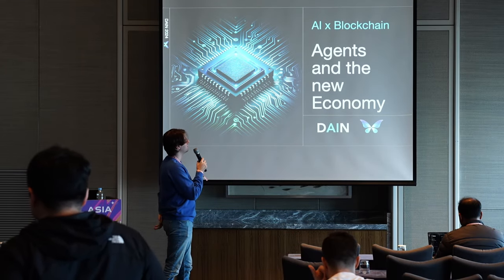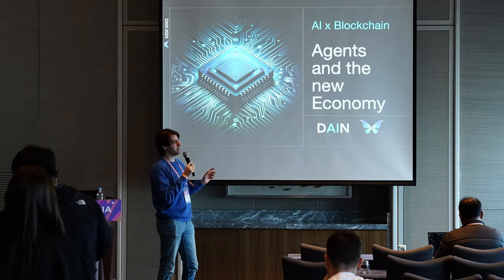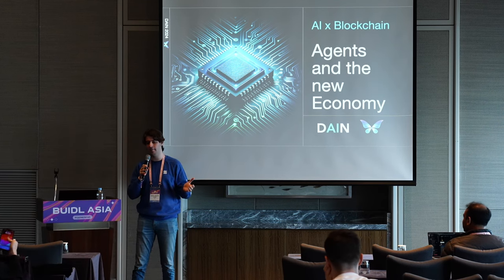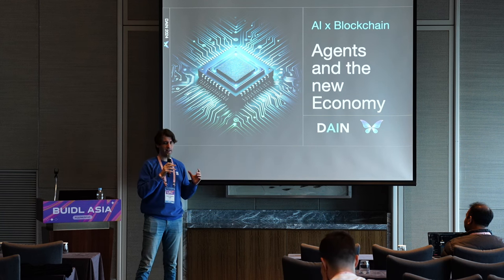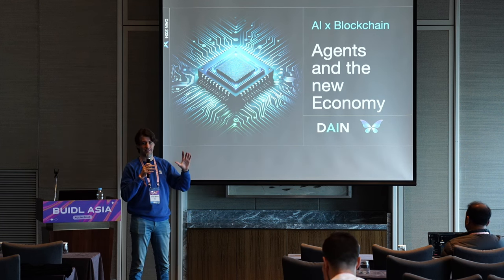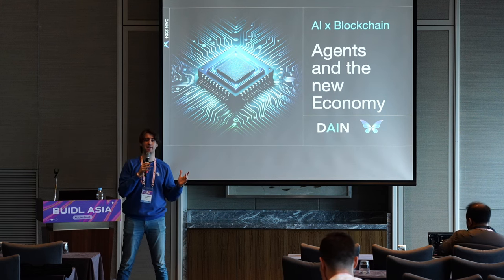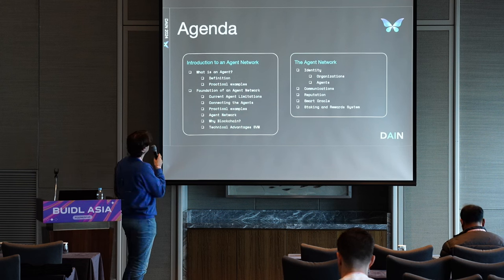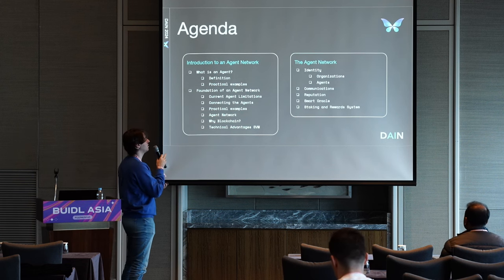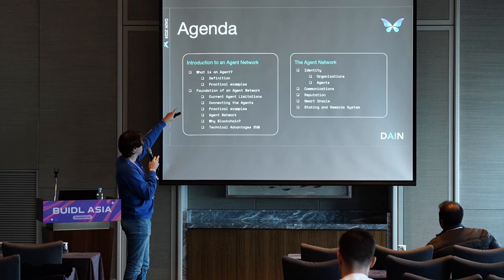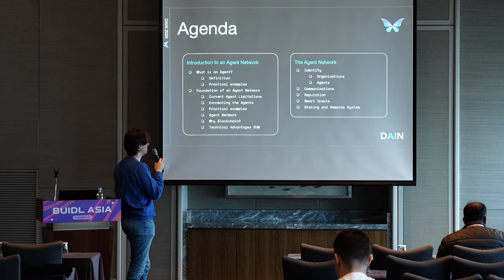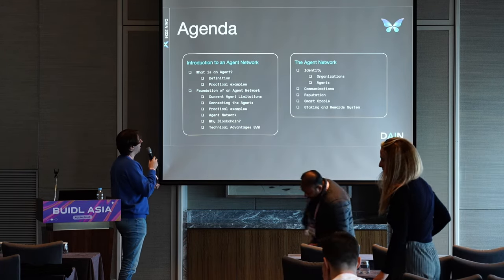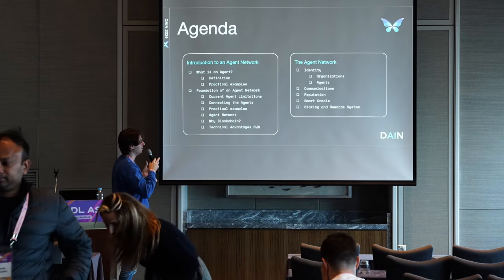In this presentation, we will see what agents and the new economy mean, and how this agent network goes together. These days there's a lot of noise about AI and blockchain, and how these things go together. This is an agent — we will see how technical concepts actually work together and how it actually makes sense. The agenda: first, what is an agent network with definitions and examples; then the foundation of an agent network and why we need it; then why blockchain; and then the core concepts.